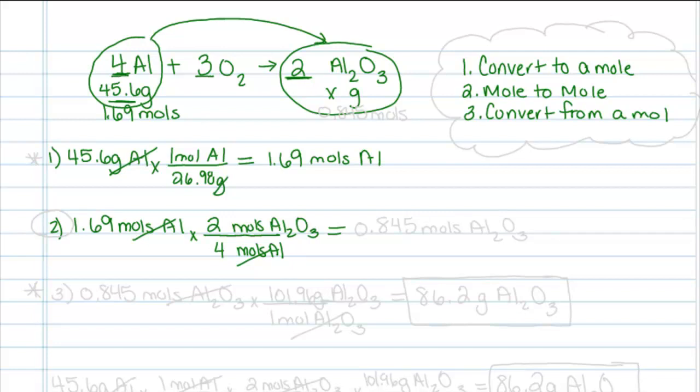So when I look at this value now, divide by 4 times 2, I see that I have 0.845 moles of aluminum oxide.